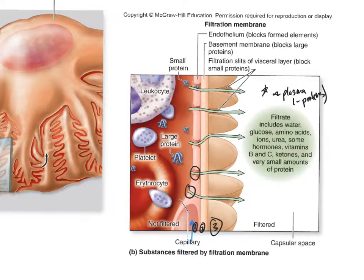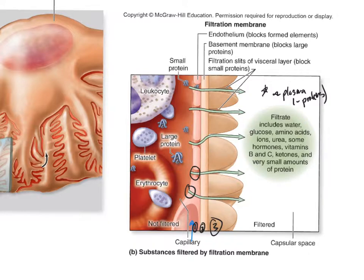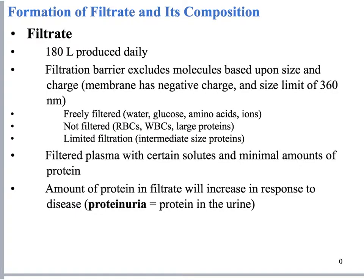The filtration membrane works by size and, to a lesser degree, charge — the filtration membrane is negatively charged, so some negative ions won't pass through. This filtration concept has inspired a lot of biotech applications; for example, we run cell culture media through very small filters to sterilize it — bacteria can't fit through — which was inspired by this biological filtration membrane.